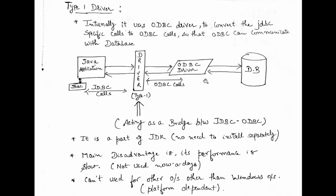The main disadvantage of using Type 1 driver is that the performance is degraded, which is why these drivers are not used nowadays. The performance degrades because there are two levels of call conversion: first, the JDBC call is converted to an ODBC call, and then the ODBC call is converted to a database-specific call. This two-level conversion increases processing time and degrades performance. As a result, Type 1 driver is one of the slowest drivers among the four types, and it has now been deprecated.